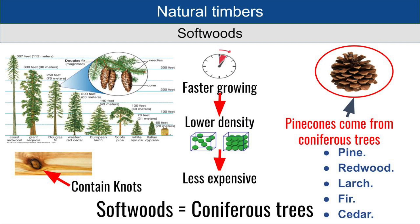The next category of timbers is softwoods. These are much faster growing than hardwoods, therefore they have a lower density. If you placed a piece of hardwood and a piece of softwood next to each other, the hardwood timber would weigh a lot more than the softwood — all due to the growing time. Because they're much faster growing, softwoods are also less expensive and easier to get hold of. We don't have to wait as long to replenish these timbers, so it doesn't drive the price up.